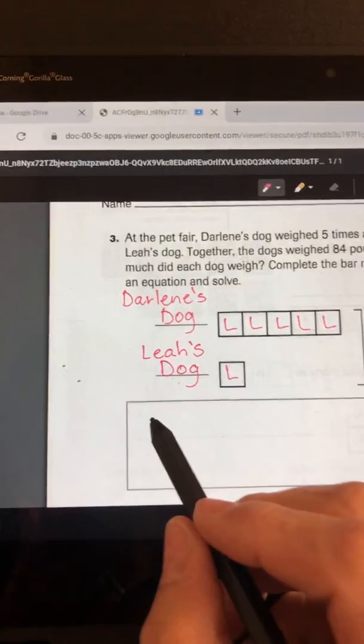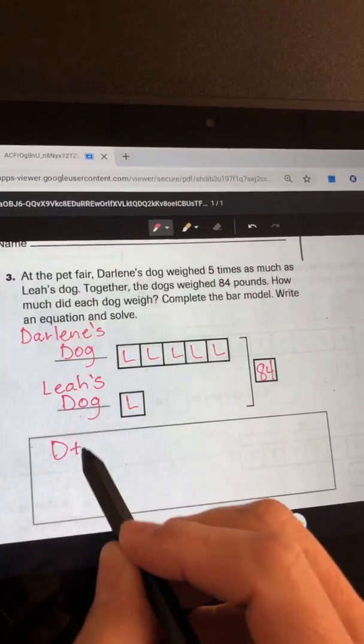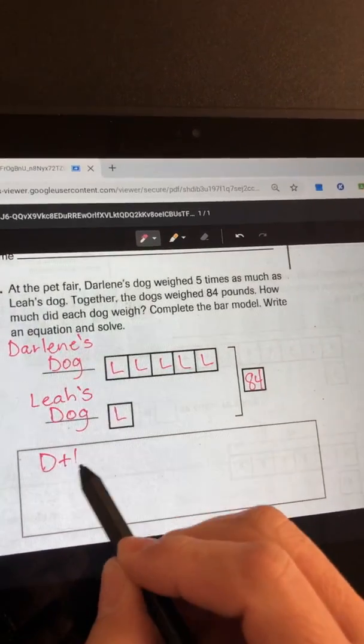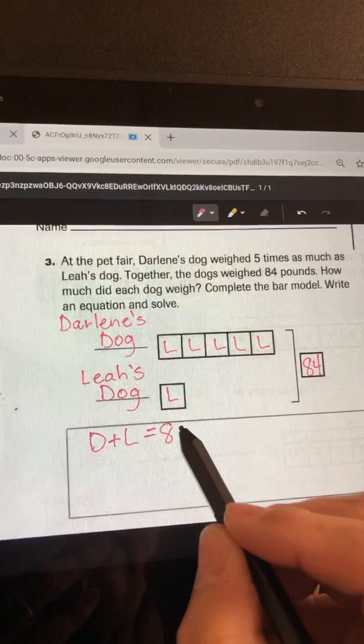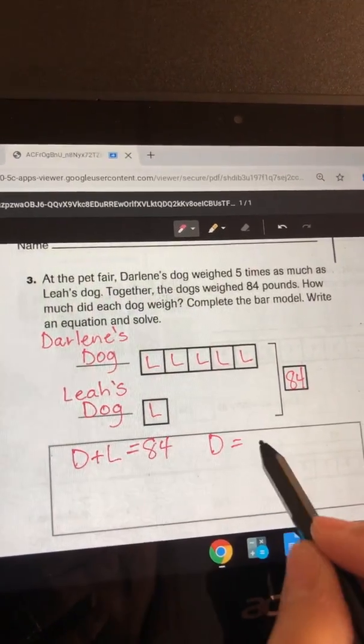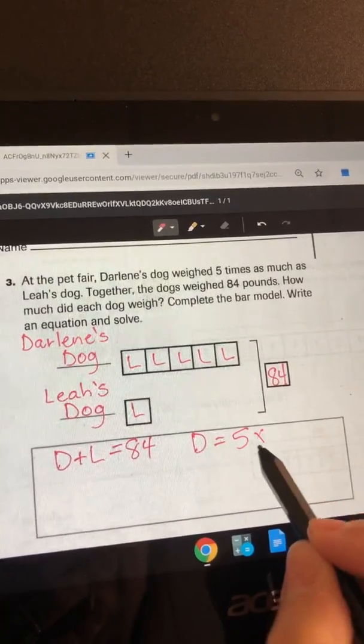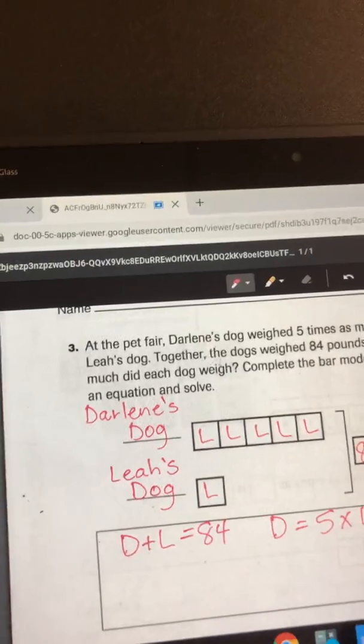Darlene's dog is gonna be represented by D and Leah's dog represented by L. D plus L equals 84. And Darlene's dog is five times the size of Leah's dog, so we need to figure out how much each of these L's are worth.